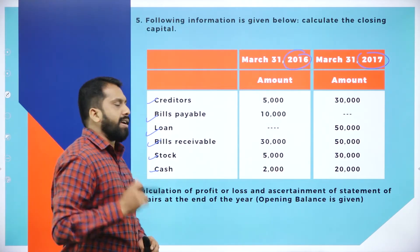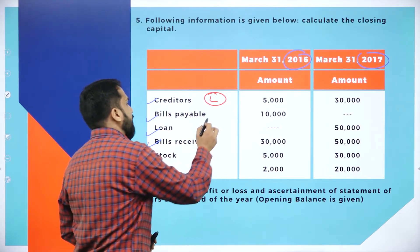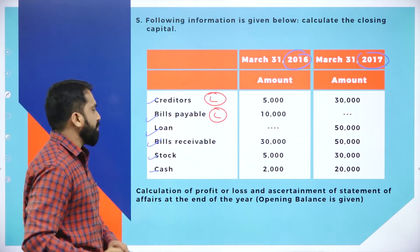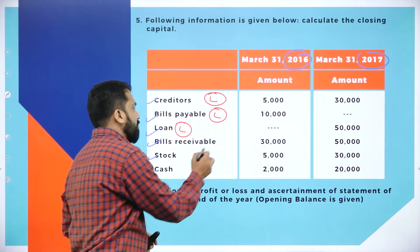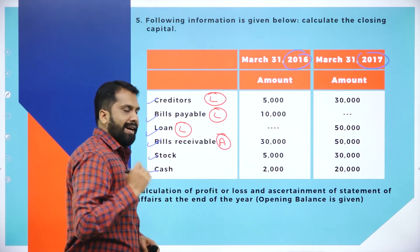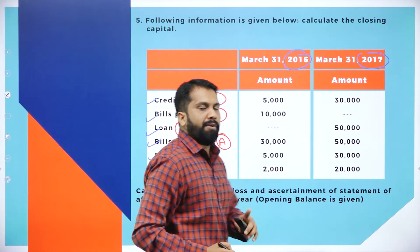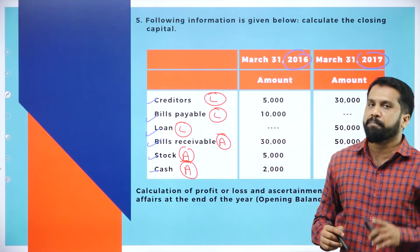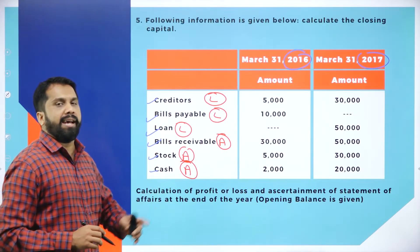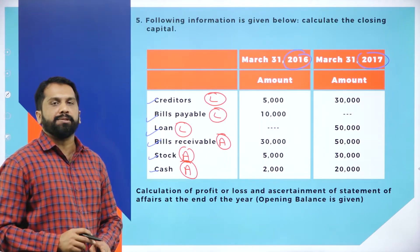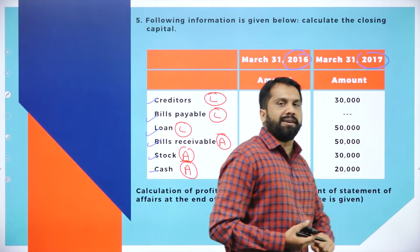So creditors, bills payable, and loans come under liability; bills receivable, stock, and cash come under assets. If you want to remember all this, refer back to our first session where I gave you the format — it's hardly half a page and easy to remember. The same classification will apply for both 2016 and 2017.